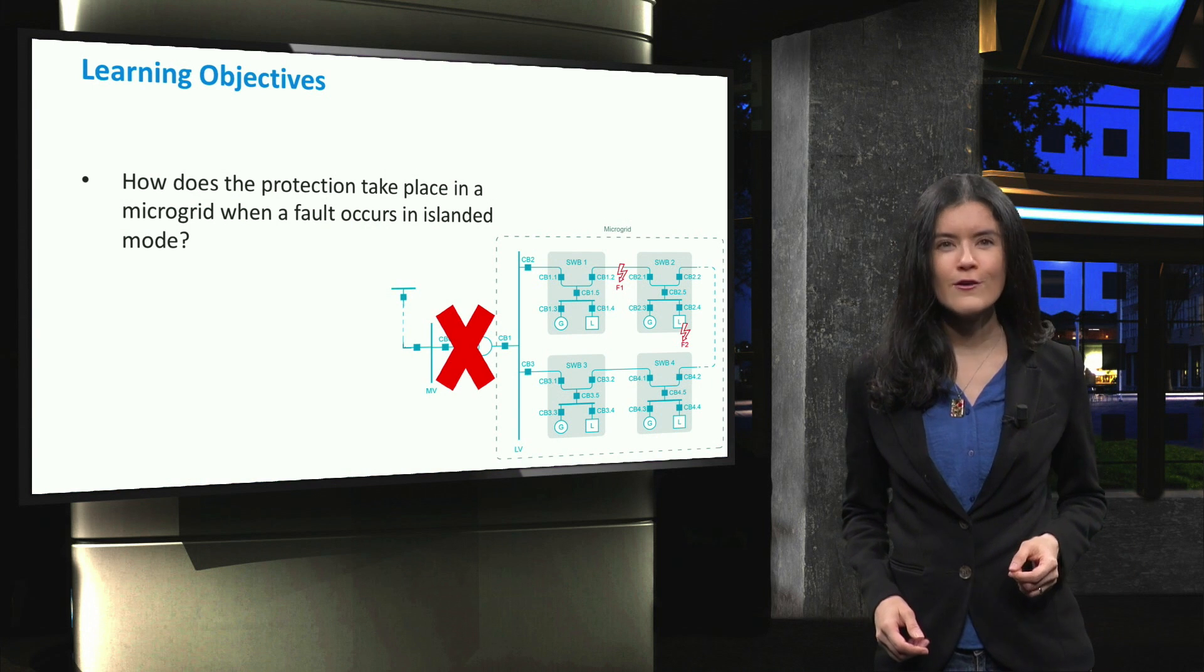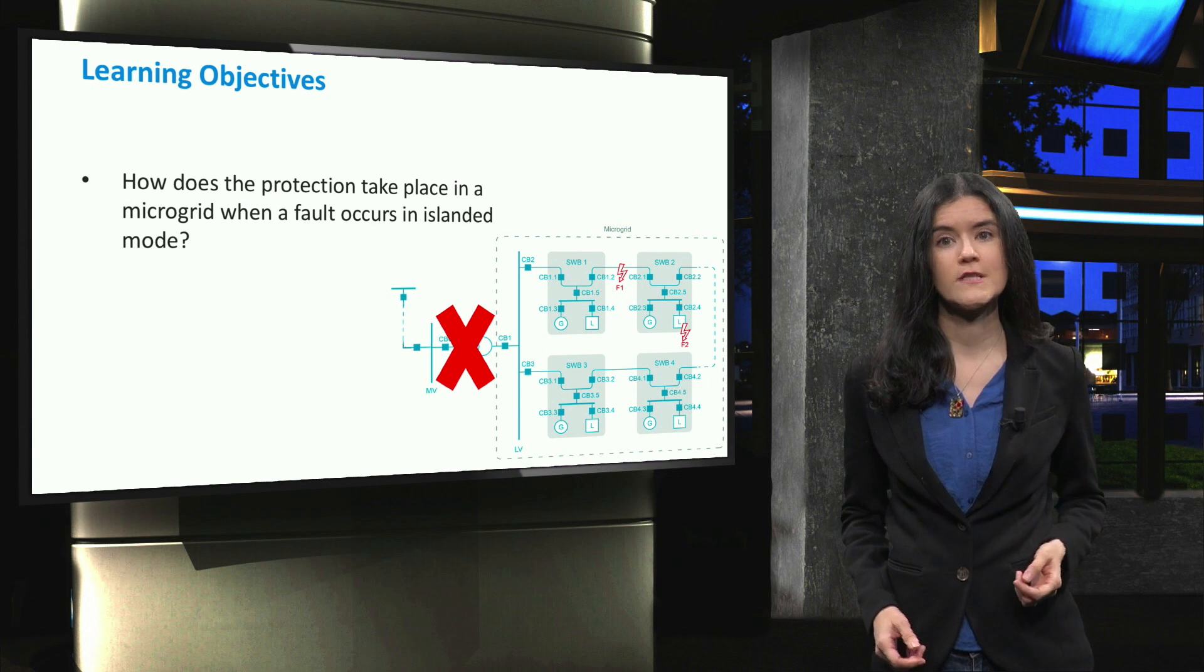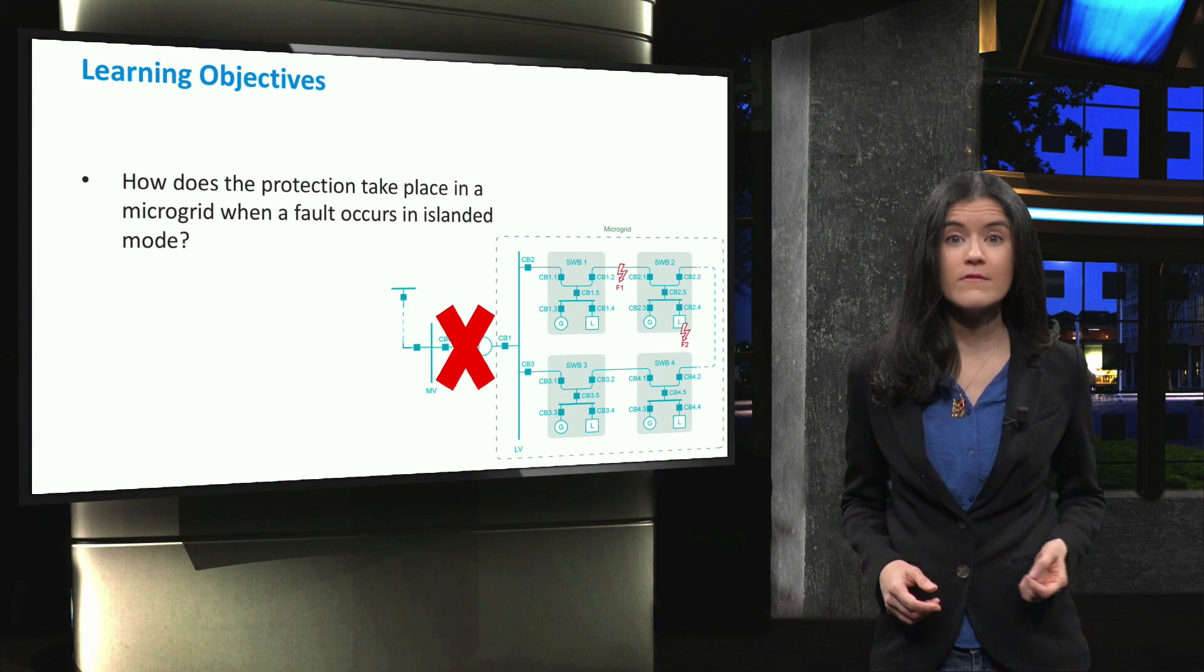In detail, we will take a look at the protection behavior when an internal fault occurs in different locations in an islanded microgrid.